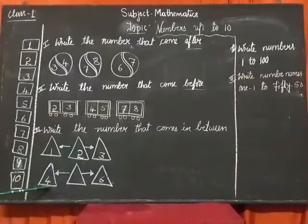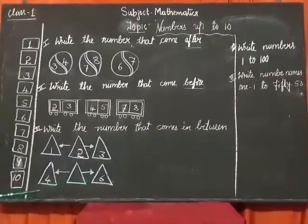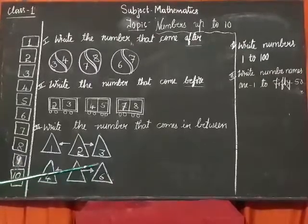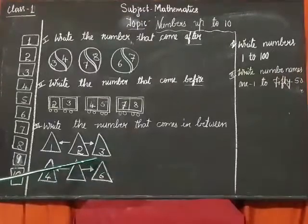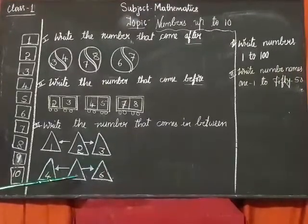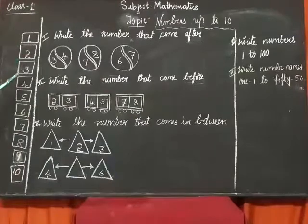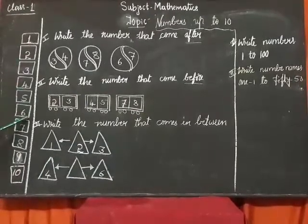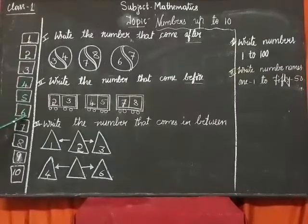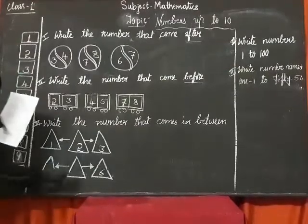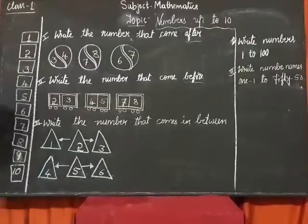Next, we will see another example for 'between.' In the first triangle there is 4, and in the last triangle there is 6. What comes after 4 and before 6? Let us check: 1, 2, 3, 4, 5, 6. What comes between 4 and 6? 5. Yes, you are right. Write 5 in the empty triangle.